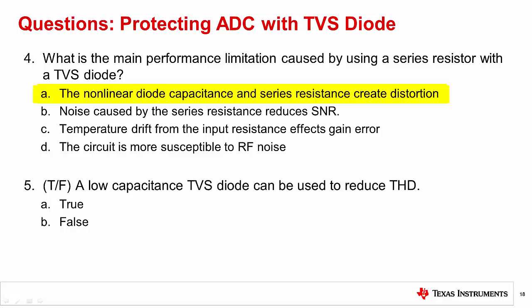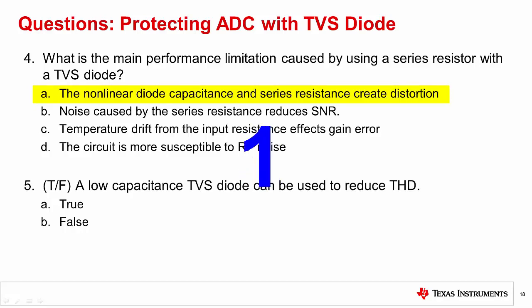Question five: True or false — a low capacitance TVS diode can be used to reduce THD. The correct answer is true. In the presentation, we compared THD performance with a low and high capacitance TVS diode. The low capacitance TVS diode gives better THD performance, but may not have a high power rating.